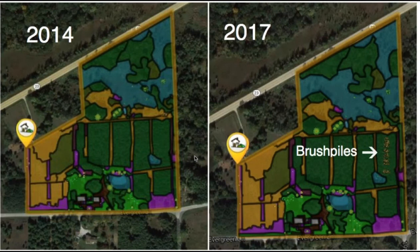The Habitat Network is set up to document change over time. You can create a map in one condition — for example, in 2014 — and then edit it later. In 2017, this person edited their map to add brush piles. Tracking change over time is a goal of the project both for your own records and as an interesting scientific question: how are people's properties changing as they become more aware of biodiversity practices?